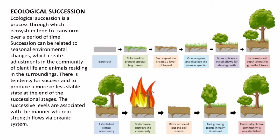Ecological succession is a process through which an ecosystem tends to change over a period of time. Succession can be related to seasonal environmental changes that create adjustments in the community of plant life and animals residing there. Successive levels are associated in a manner where energy flows through the organic system. In simple words, ecological succession is the evolution of the environment.